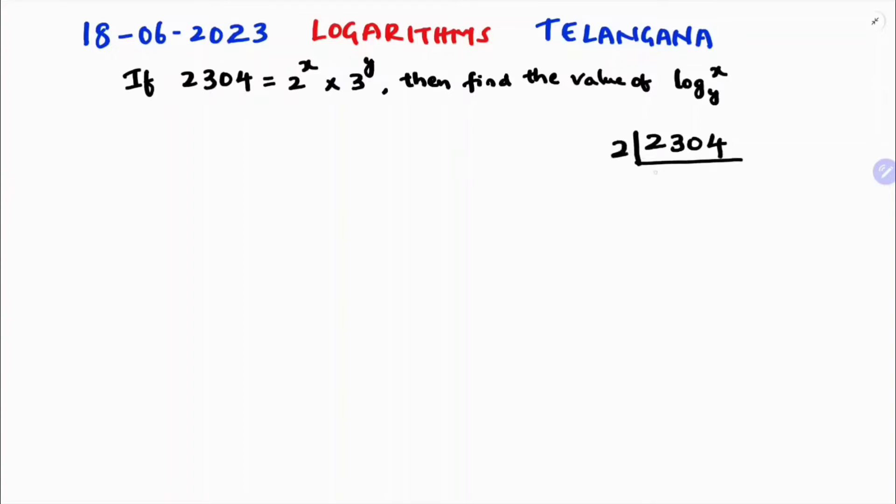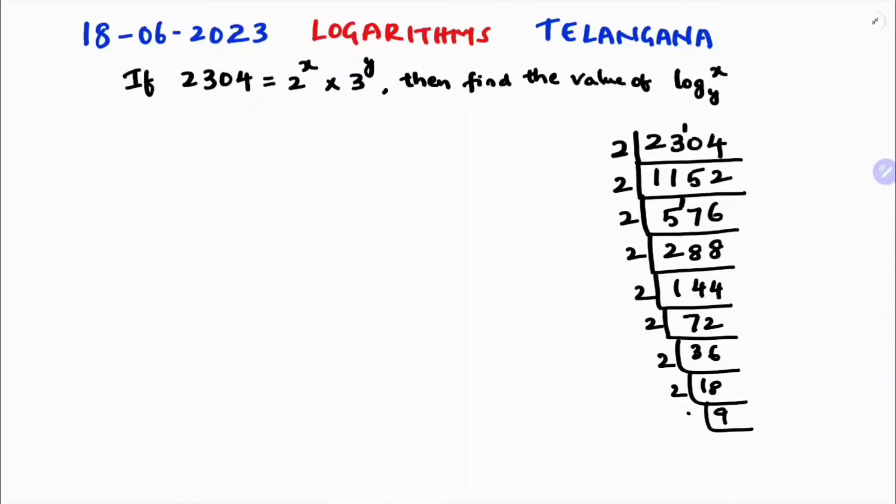Finding the prime factors: 2 times 1152, 2 times 576, 2 times 288, 2 times 144, 2 times 72, 2 times 36, 2 times 18, 2 times 9, 3 times 3. So we have 2 appearing 8 times and 3 appearing 2 times. Therefore, 2304 equals 2 power 8 into 3 power 2.